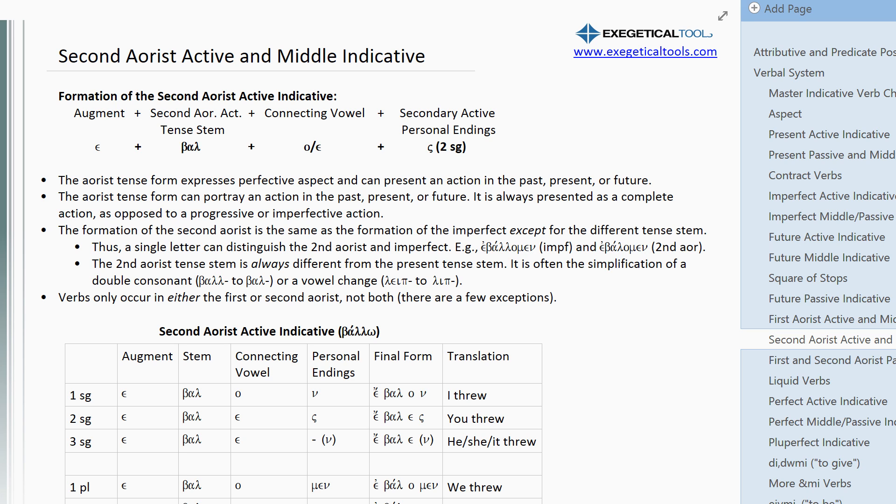You may need to watch the 1st Aorist passive video before this, but not necessarily. You'll be okay if you don't. So, the 2nd Aorist active and middle indicative.